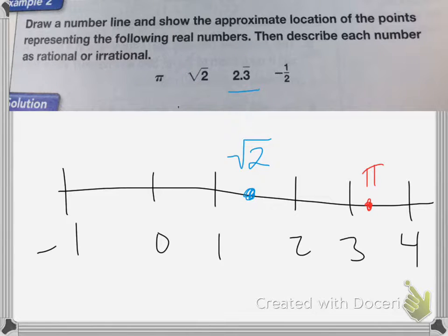2.3 with a line over it means that it's 2.3333 on forever. So that's going to end up right after the 2, right about here, 2.3.